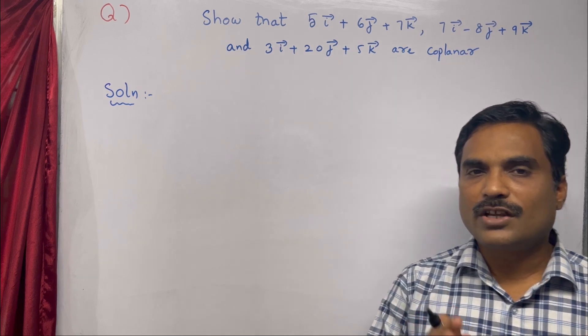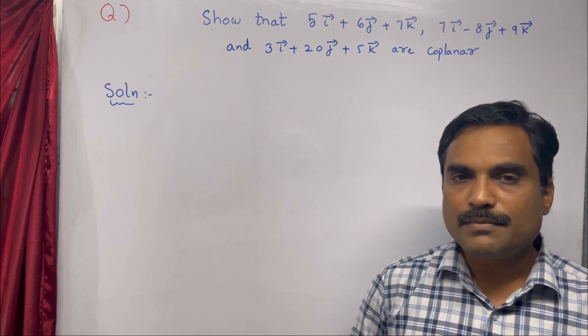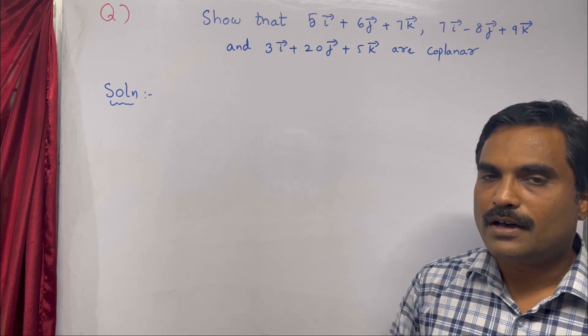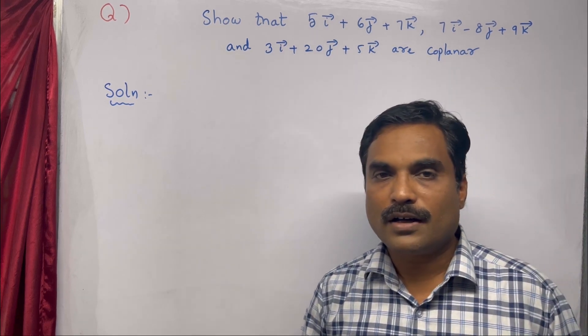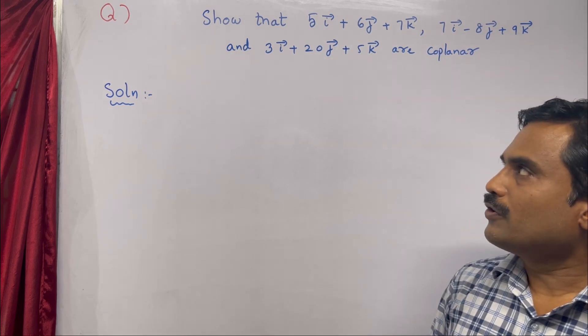If you observe this problem, they have given three vectors. The first vector is â, the second vector is b̂, and the third vector is ĉ. You need to show that â, b̂, and ĉ are coplanar, meaning they lie on the same plane.